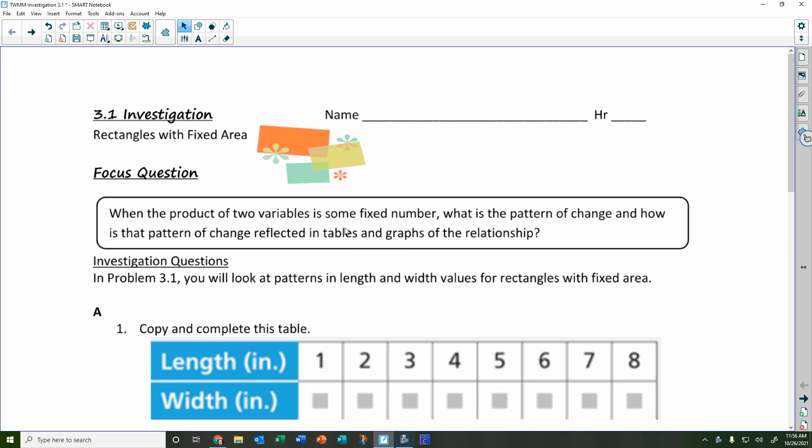You're not going to be actually on the video, so don't worry. Alright, so in investigations 1 and 2, we dealt with all linear stuff, right? Straight lines, constant rate of change. So in this investigation, we're going to deal with rectangles with a fixed area.